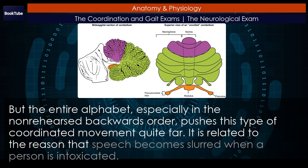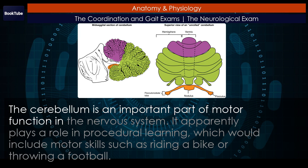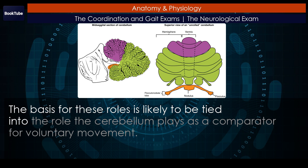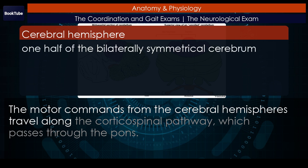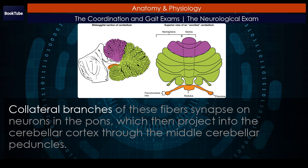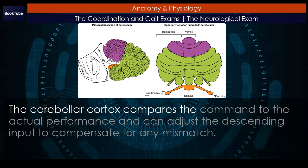It is related to the reason that speech becomes slurred when a person is intoxicated. The cerebellum is an important part of motor function in the nervous system. It apparently plays a role in procedural learning, which would include motor skills such as riding a bike or throwing a football. The basis for these roles is likely tied into the role the cerebellum plays as a comparator. For voluntary movement, the motor commands from the cerebral hemispheres travel along the corticospinal pathway, which passes through the pons. Collateral branches of these fibers synapse on neurons in the pons, which then project into the cerebellar cortex through the middle cerebellar peduncles. Ascending sensory feedback, entering through the inferior cerebellar peduncles, provides information about motor performance. The cerebellar cortex compares the command to the actual performance and can adjust the descending input to compensate for any mismatch.